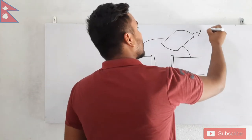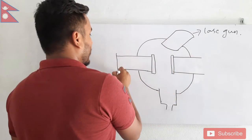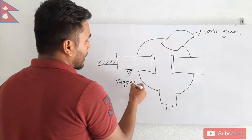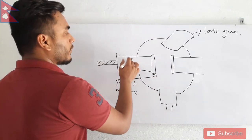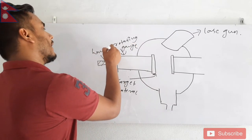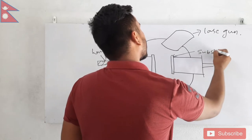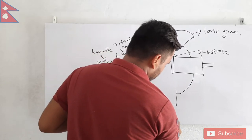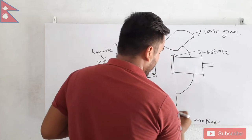Now, this is the laser gun — let's call it the laser gun — from which the laser will strike the target material. This is the target material, which is mounted on a rotating gauge. This is the handle for rotation. Here, this is the substrate. This is the diagram for the laser ablation method, and here we also have a vacuum pump to create vacuum inside the chamber.